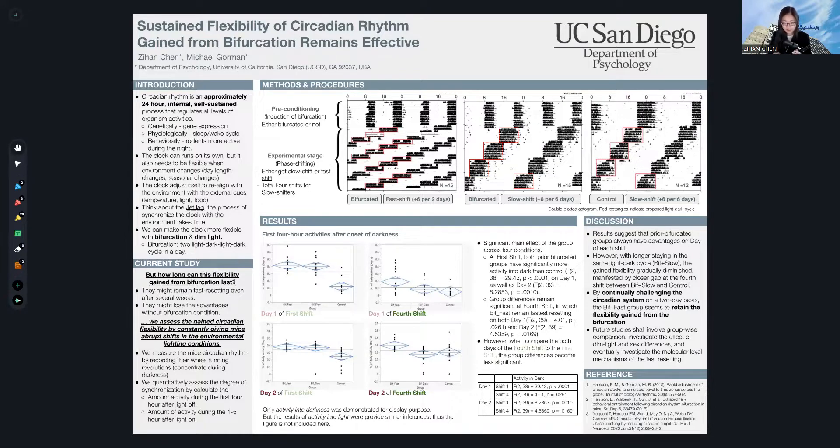We know that all mammals have an internal central circadian clock that regulates all levels of activities. One fundamental property of the mammalian circadian clock is that the clock is able to adapt to changes in environment, but it's a slow clock, it's slow to change.